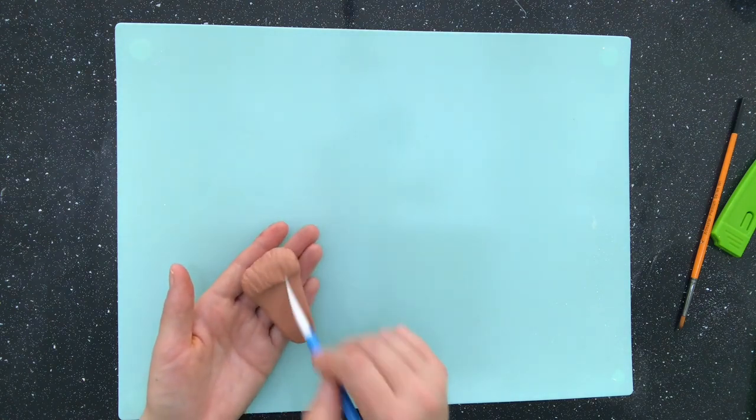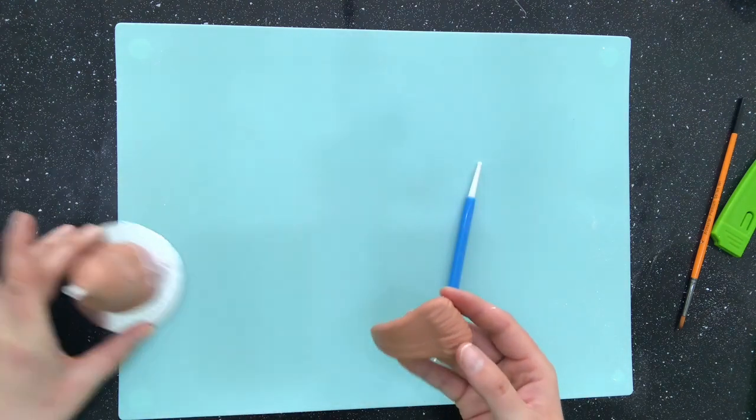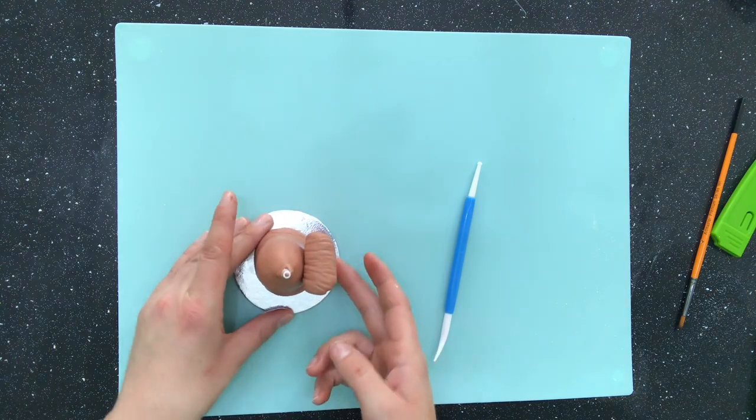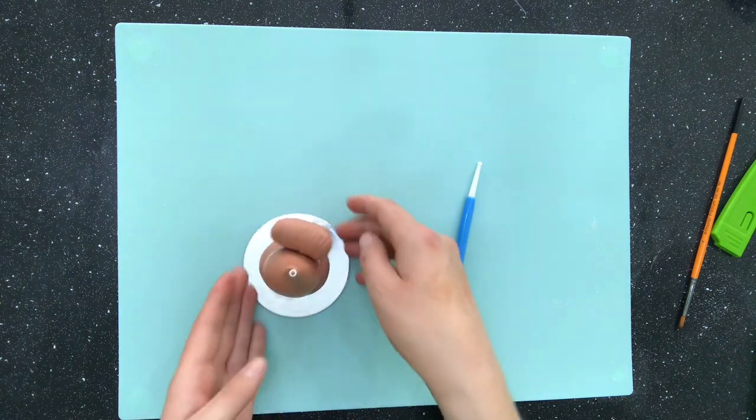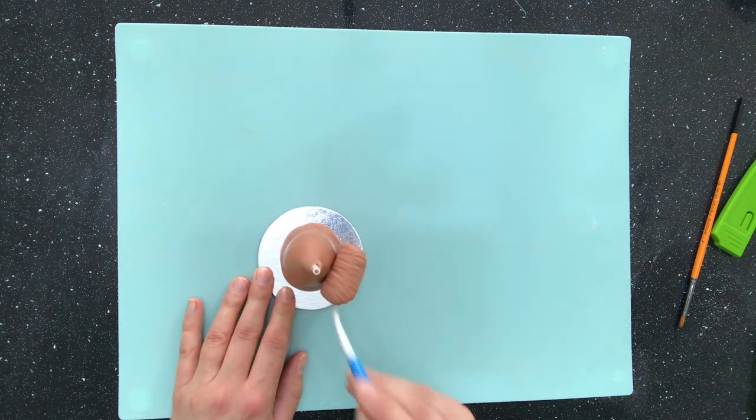And then I can stick this to the body with just a little bit of water. I finish the fur lines when the tail is stuck in place just so I can get the areas where I was actually holding onto it.